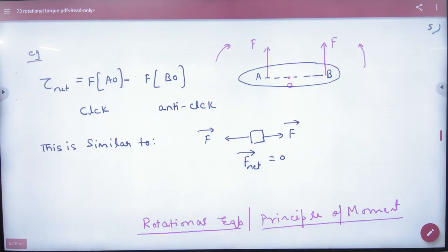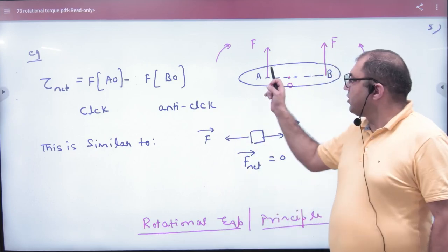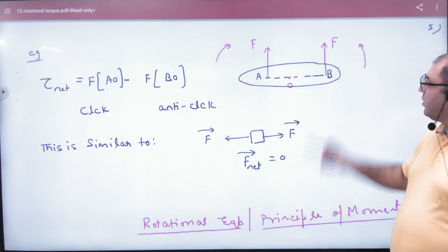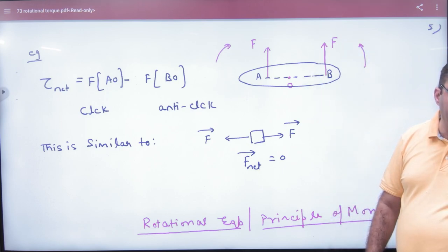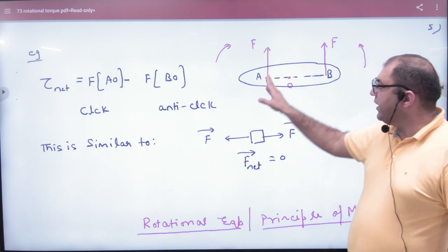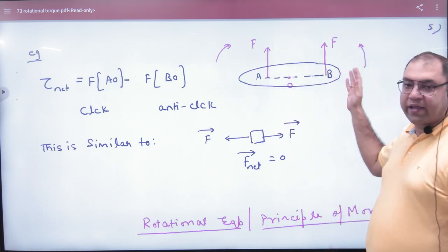But if I put forces like this, one force is above and the other force is not above. So how will the torque generate? F into AO. And how will the torque generate? F into OB. But see the direction. What will this force do? How will the body be? Clockwise. And how will it be? Anti-clockwise.